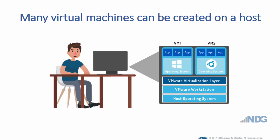Many virtual machines can be created on a single host computer. In this image the computer is running two virtual machines: VM1, which is running the Windows operating system, and VM2, which is running the Ubuntu Linux operating system. These virtual machines are on top of the virtualization layer being managed by VMware Workstation.